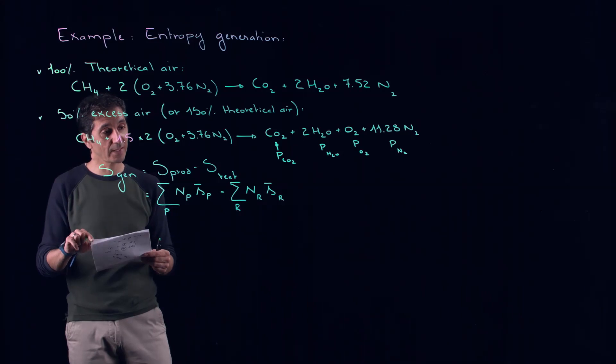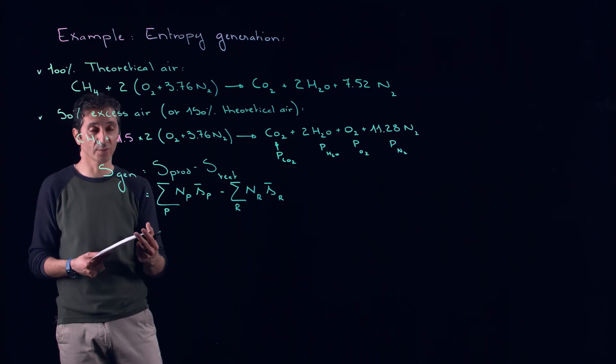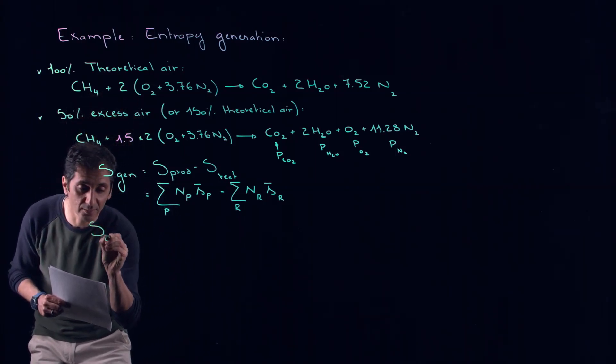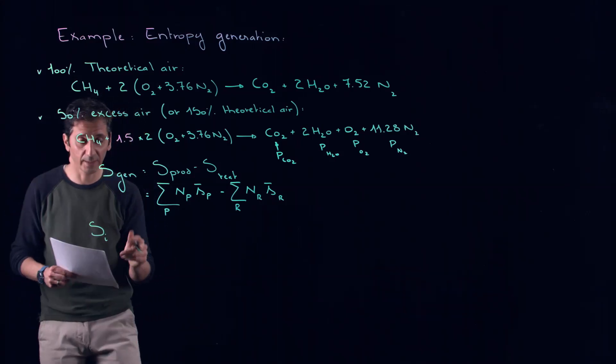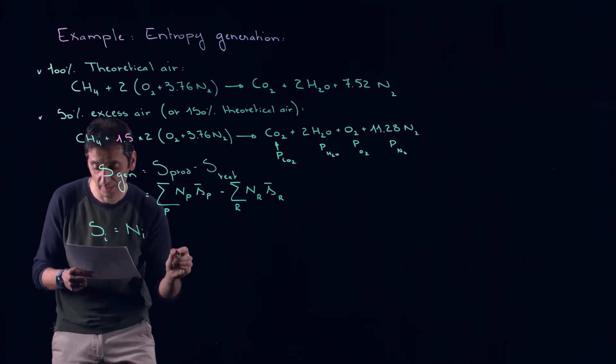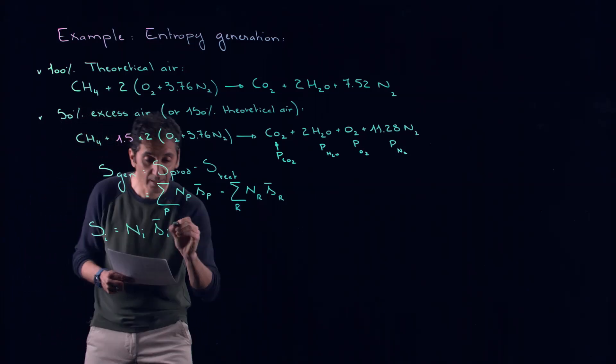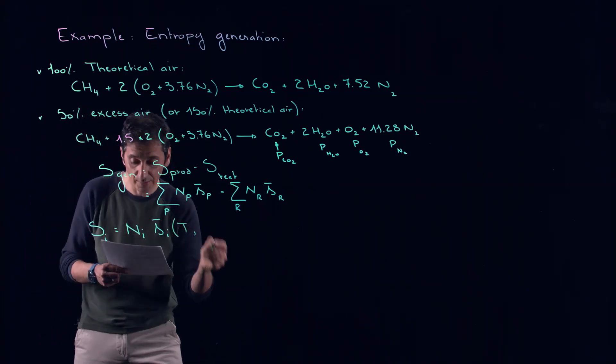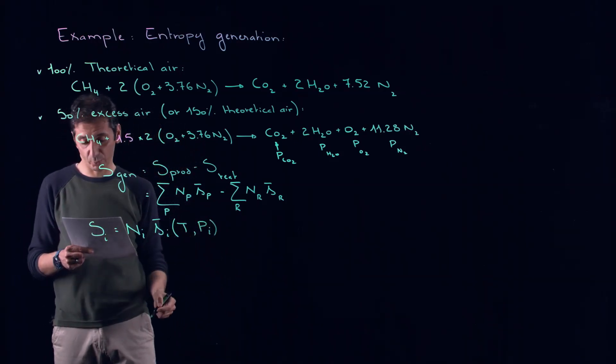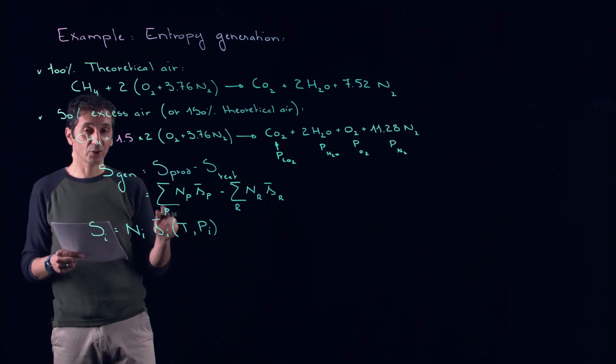The next step is just to apply the formulation that we introduced, telling us that if you would like to get the entropy of one component, it's equal to the number of moles times SI bar, which depends on the temperature and its partial pressure PI. This is extremely important.